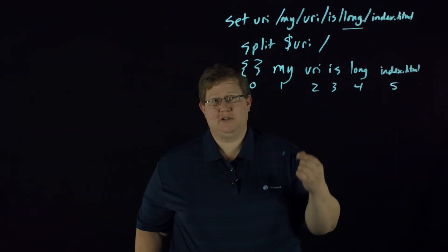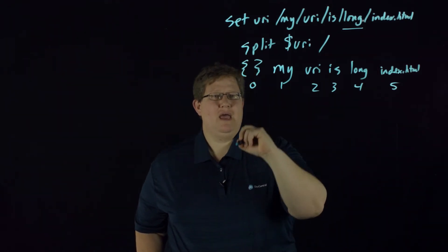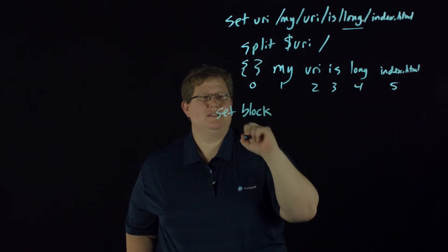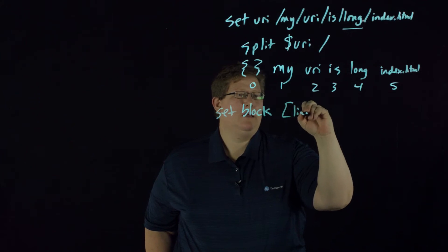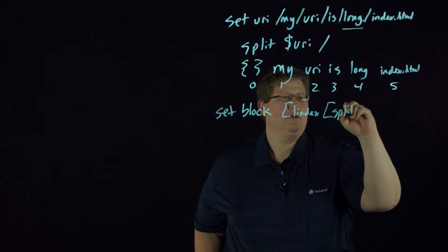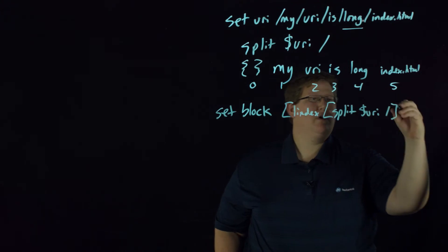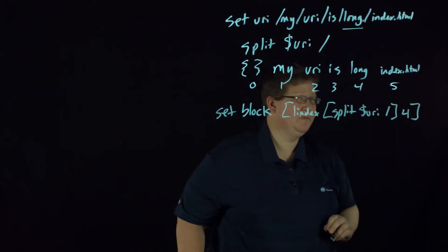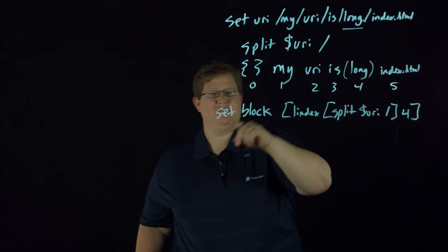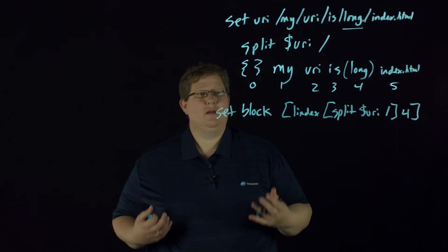If I'm going to combine this stuff, I'm going to set my block. So set block, and then I'm going to do an lindex split URI on that. I want which one? Fourth. And now that word here is going to be set to this block variable. And then here's where the magic starts.